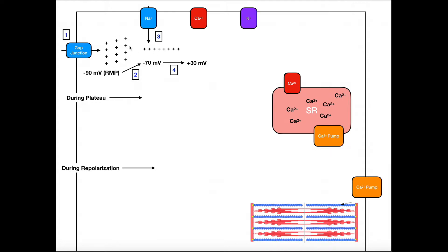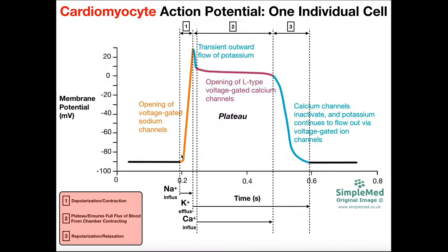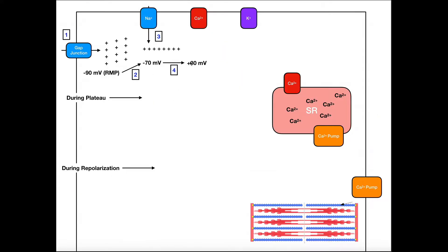When the membrane potential moves to negative 70 millivolts, a voltage-gated sodium channel is triggered to open. At rest at negative 90 millivolts this channel is closed, but it senses the change to negative 70 and opens, causing sodium influx into the cardiomyocyte. There is so much sodium influx that the membrane potential moves from negative 70 all the way to positive 30 millivolts — a massive change corresponding to the opening of voltage-gated sodium channels on the graph.